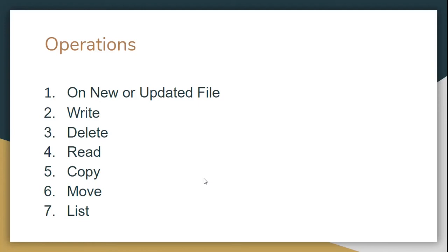On new or updated file will act as a source. Apart from this, all other operations will act as processors: write, delete, read, copy, move, and list. Write file lets us write any file. Delete removes a file by name. Read is a very important functionality we can call on demand during processing. Copy lets us copy a file to another directory, move transfers a file between directories, and list shows the number of files in a directory along with their properties.